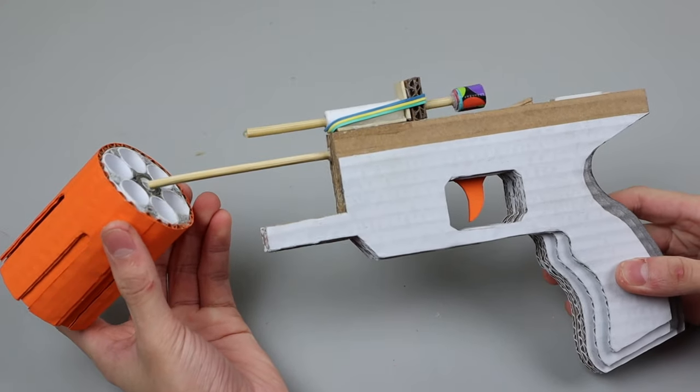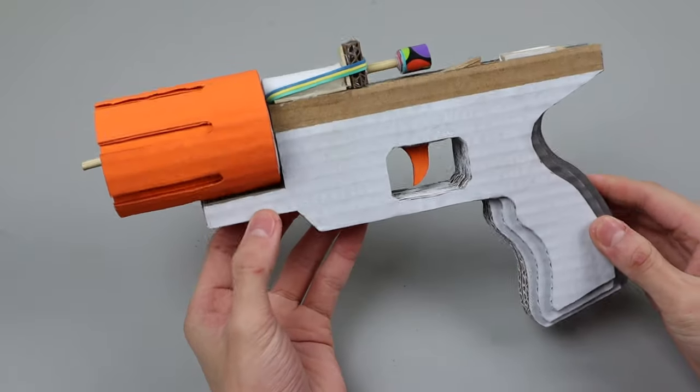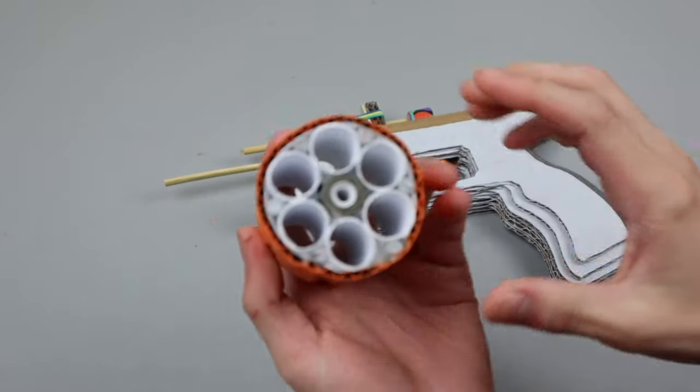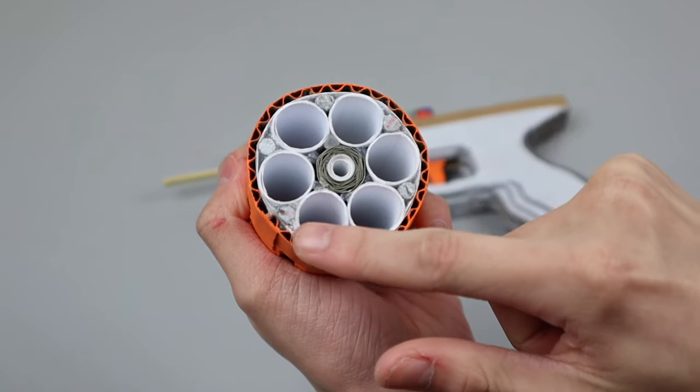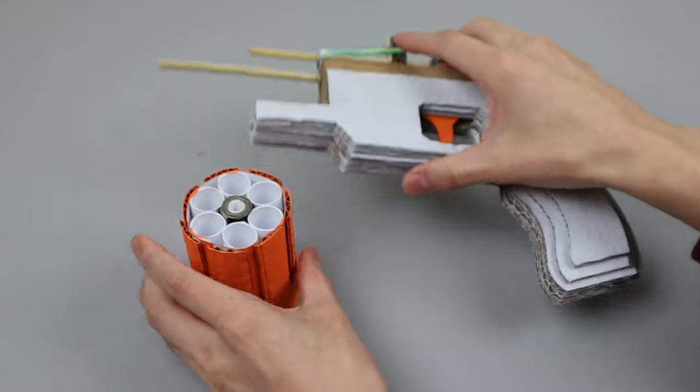Next I made this revolving barrel piece which will be able to hold six shots. It's worth mentioning that I placed magnets all around the barrel here, and those magnets will be attracted to this other magnet which I hid inside the gun.